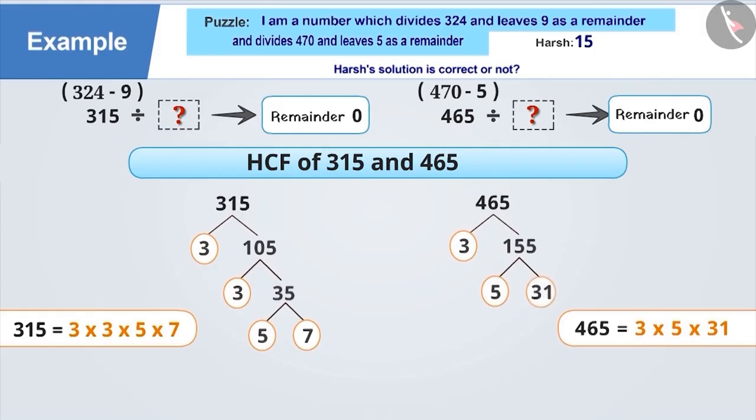Both 315 and 465 have 3 and 5 as factors. Hence, the HCF of 315 and 465 is 3 into 5, which is 15.